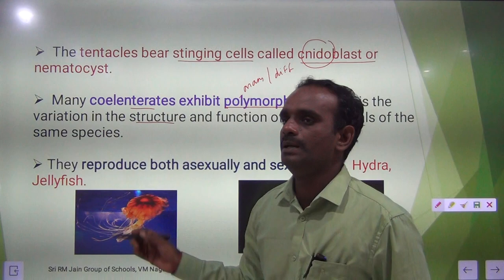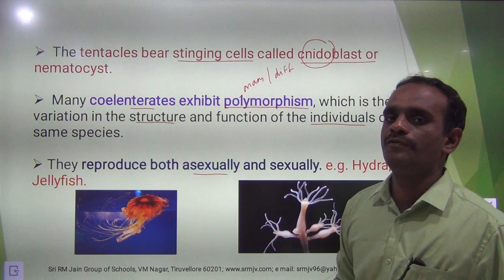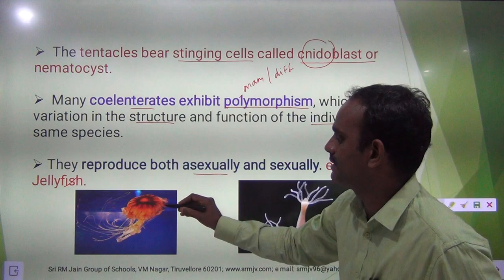They reproduce by both asexual and sexual methods. Examples for Coelentrata are Hydra and jellyfish. See the structure of jellyfish and the diagram of Hydra.